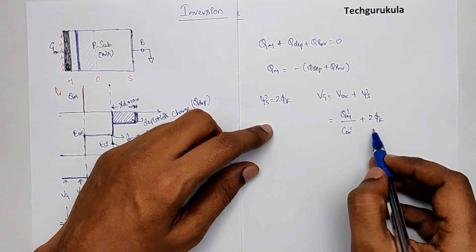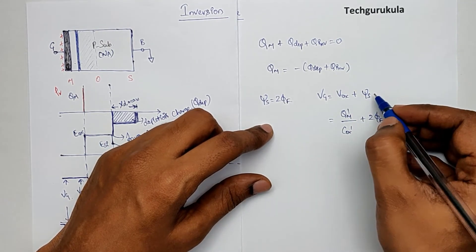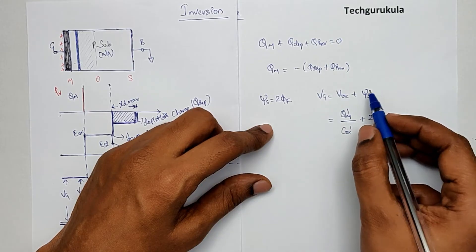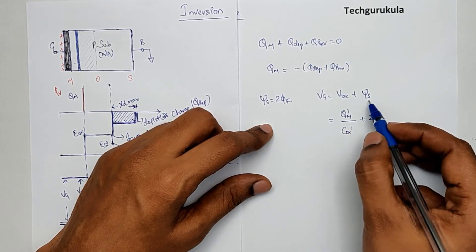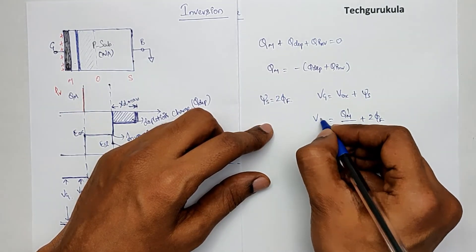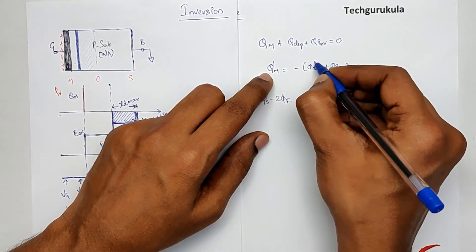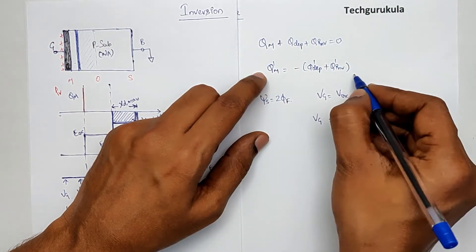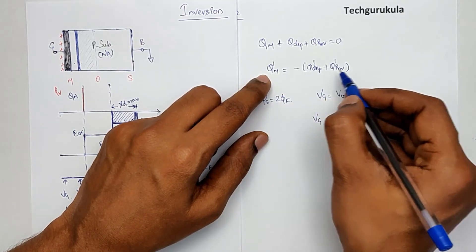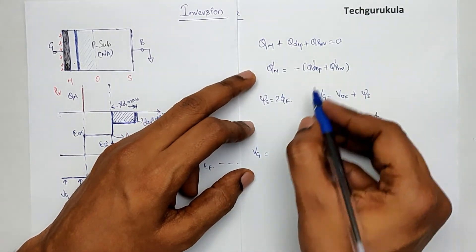Beyond inversion, a slight change in the surface potential gives rise to a huge change in electron concentration at the surface. Hence, the surface potential at the silicon-silicon dioxide interface does not change much after threshold voltage — that is why we keep it at 2*phi_f. Now, Q_m_prime equals Q_depletion_prime plus Q_inversion_prime. Since the areas are the same they cancel, giving charge per unit area for each term.